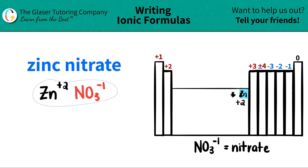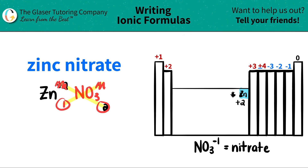Now I am ready to do a little trick with crisscrossing. I take these charges and crisscross them down to see how many of each component I need. This plus two crisscrosses down telling me that I need two nitrates, and then this negative one crisscrosses down telling me that I need one zinc. When you do this trick, don't worry about the charges anymore — you're just looking at these subscripts, because that's what we're going to be writing.